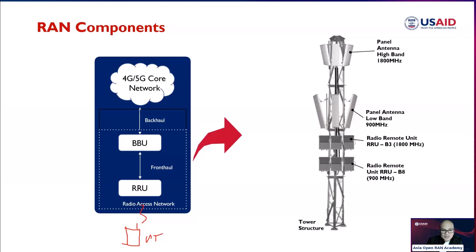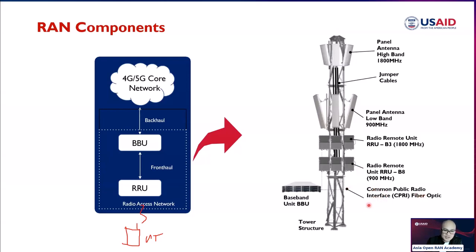The remote radio unit is connected to the antennas via copper cable, and connected to the baseband unit via fiber optic cable, also known as the Common Public Radio Interface, or CPRI. CPRI is a standard protocol used to transmit digital signals between the RRU and the BBU, ensuring signals are transmitted quickly and efficiently without any loss or degradation in quality.